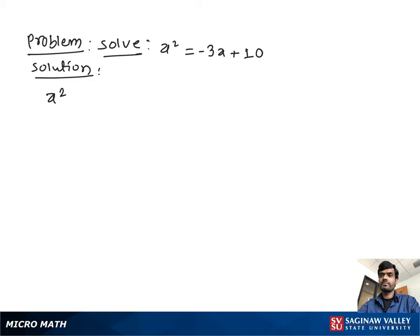Solve a² = -3a + 10. First, we bring all the terms to the left side and make the right side 0, so write a² + 3a - 10 = 0.